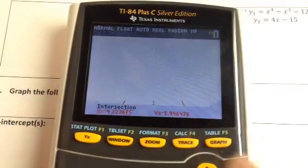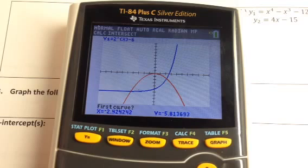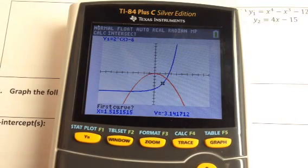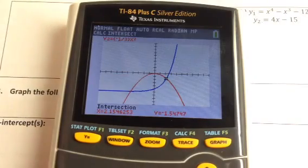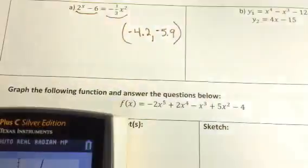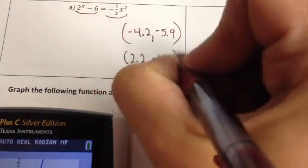And then I'm going to do this again, second trace. And this time I'm going to choose 5 again. And I'm just going to move my cursor to the other one. And that's close. Hit enter three times. And this one, 2.2 and negative 1.5.